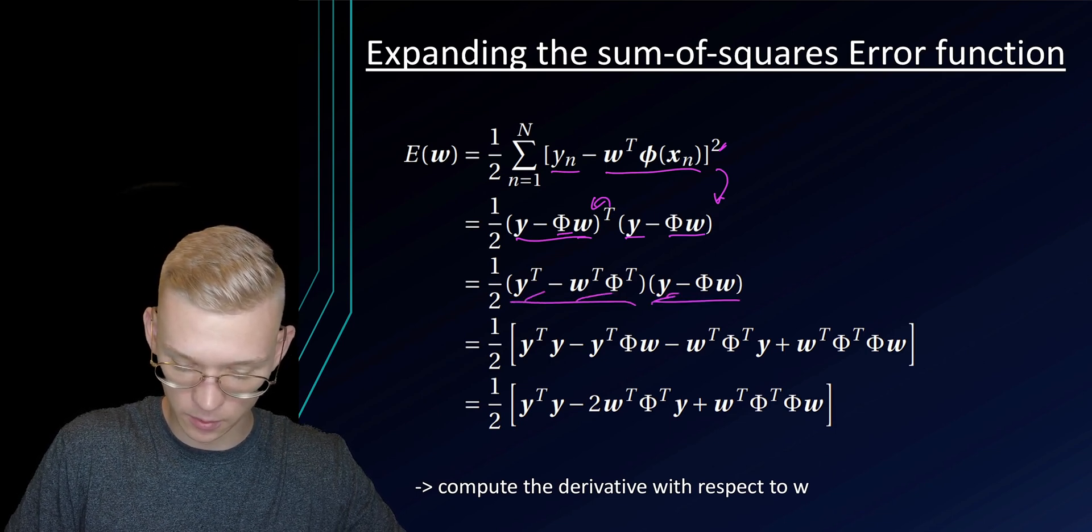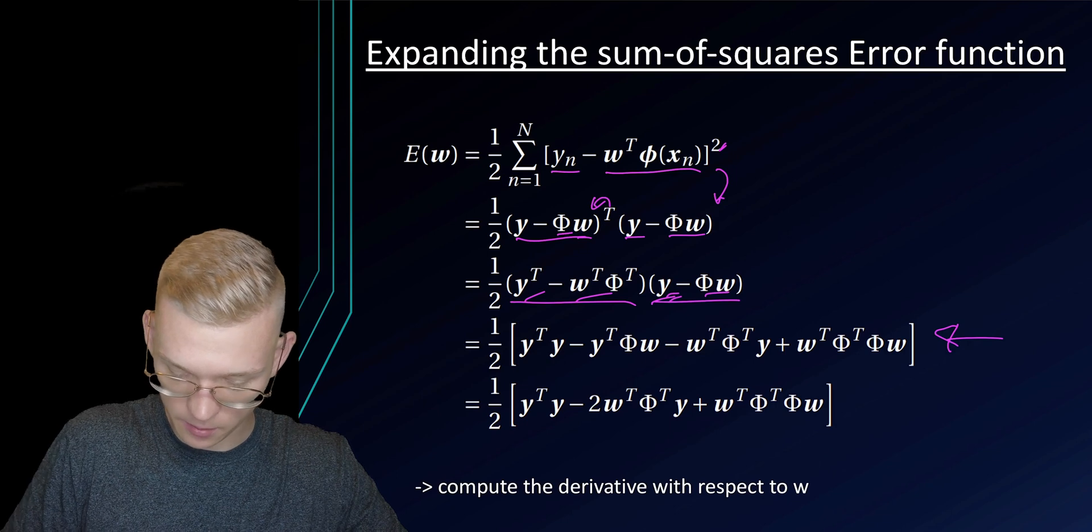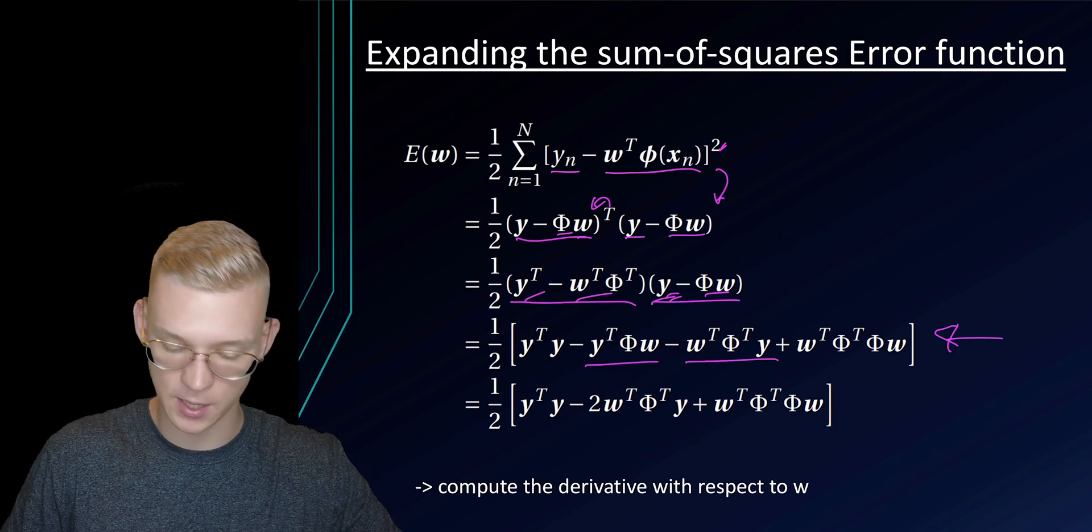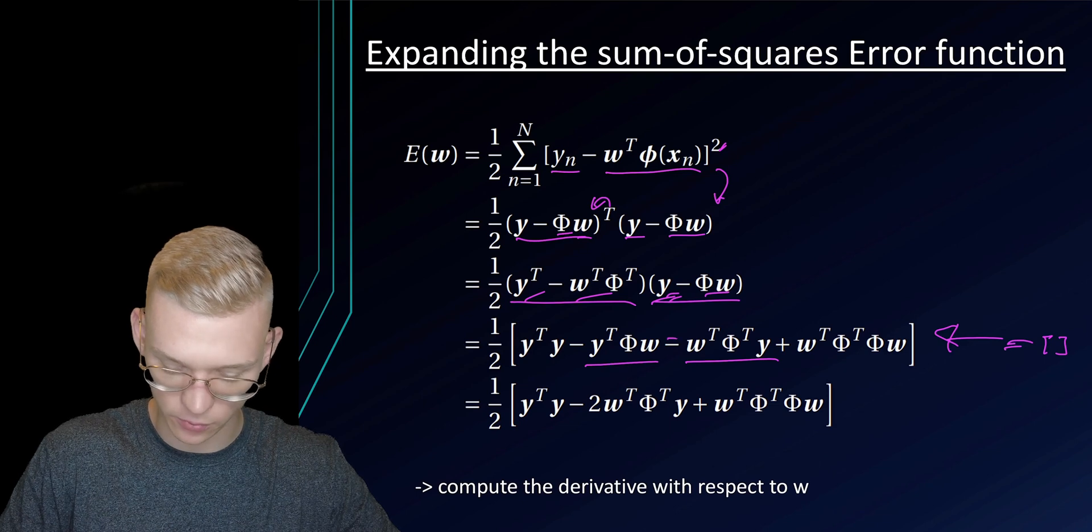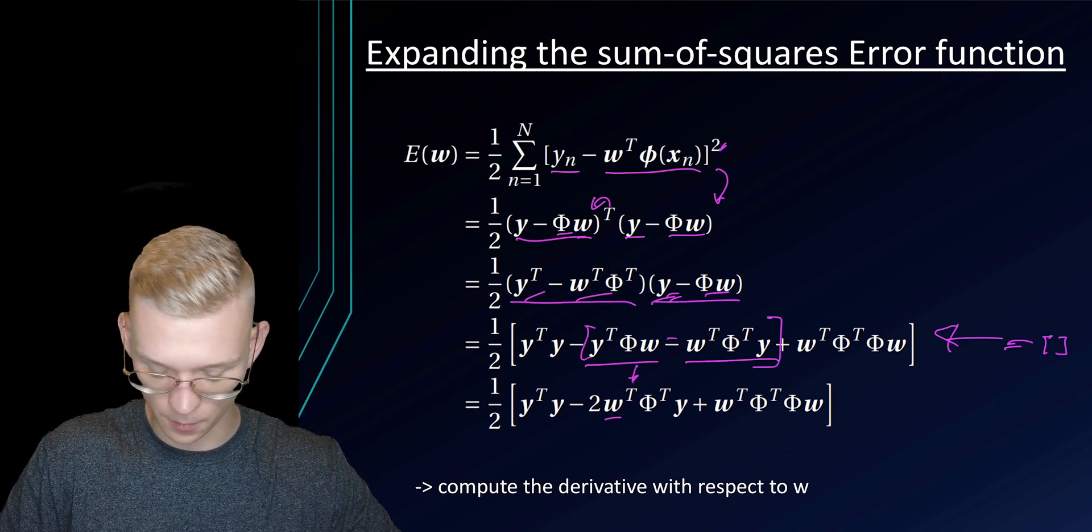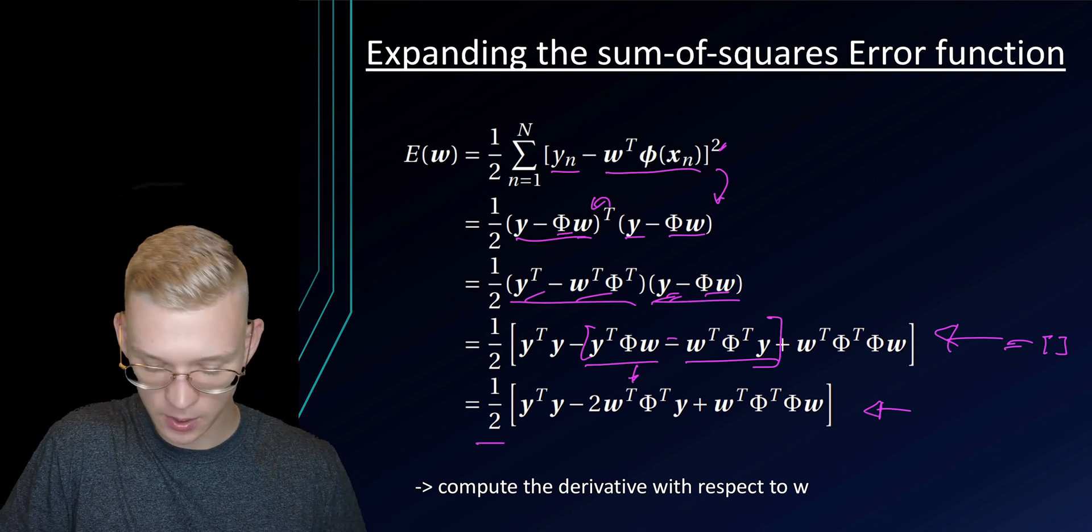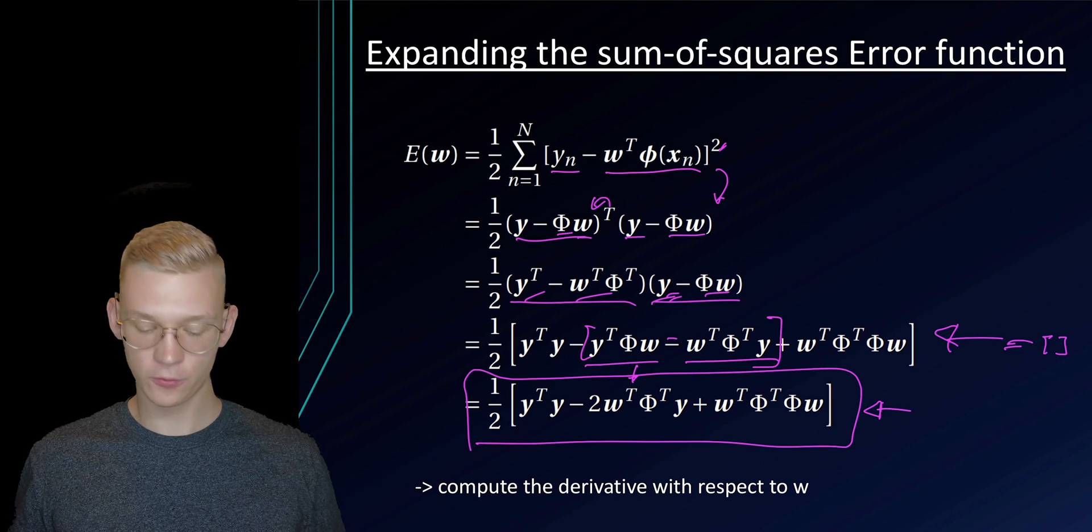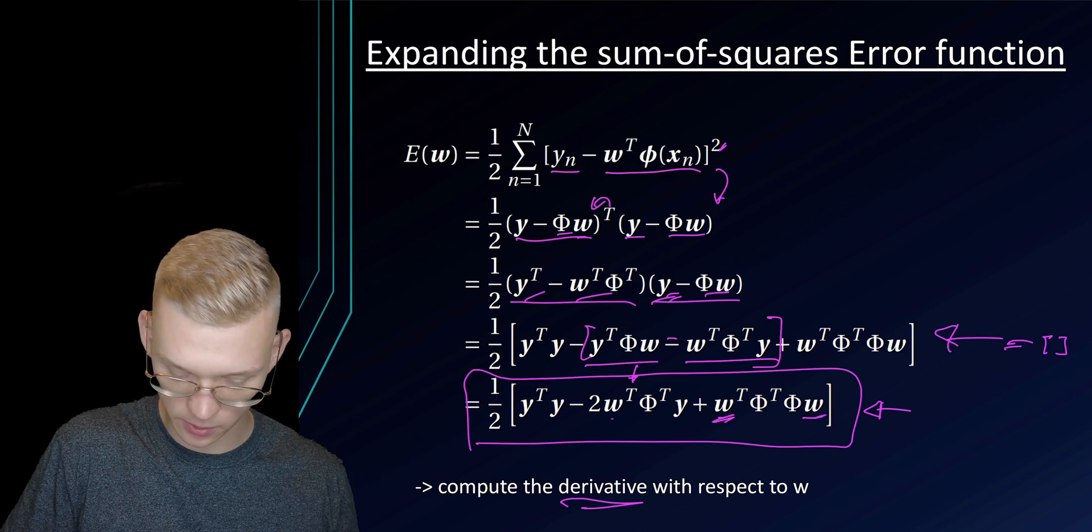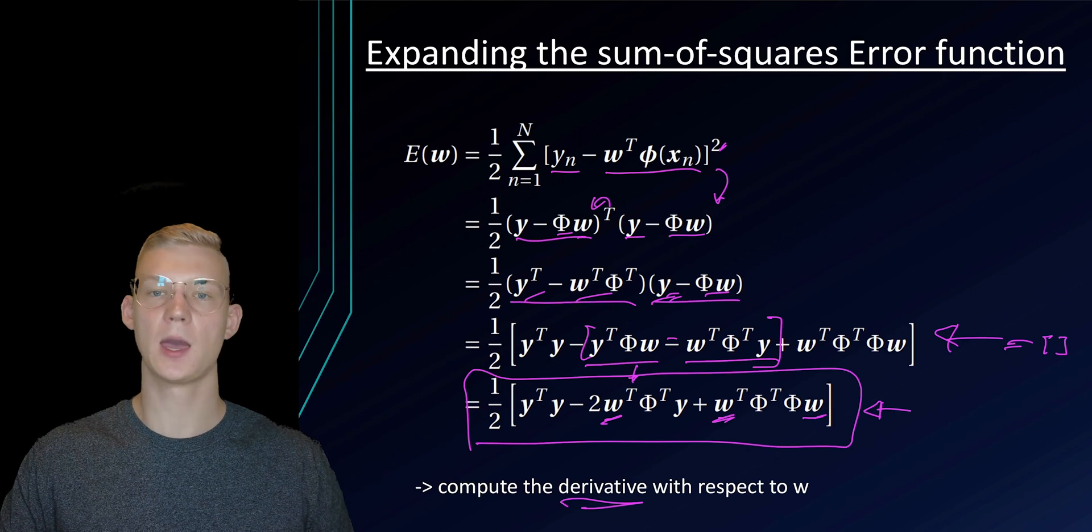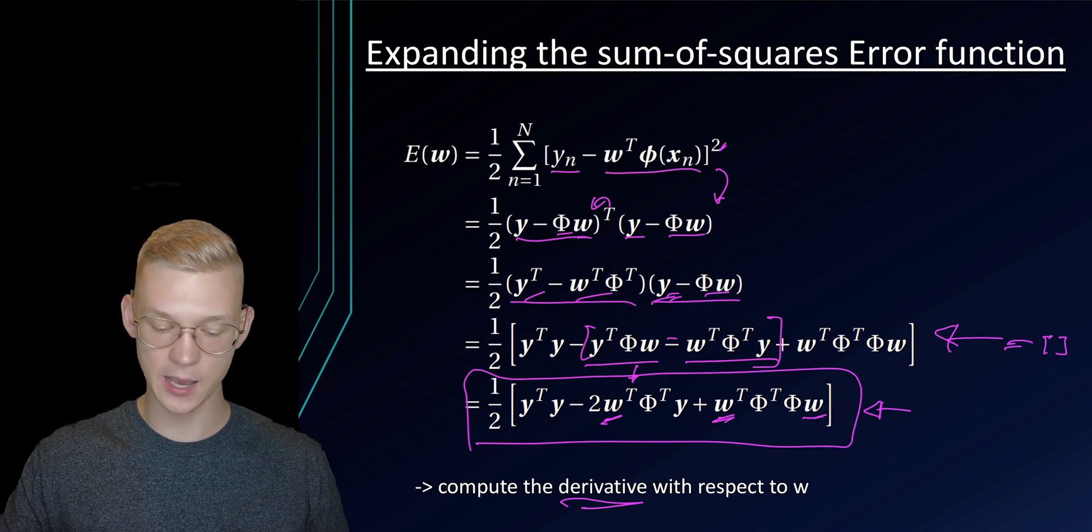We insert basically the transposed into the brackets. We will get this term. Now we multiply each term with each other term and we will get this expression. We see that we have this term and this term and the result is a single value. So these are actually the same. That's why we have 2 times w transposed, phi transposed and y and we are basically left with our error function that now looks like this. Now we have to derive our error function with respect to our parameters w. Set this derivative to zero and this is how we get our optimal parameters so that our error is as small as possible.